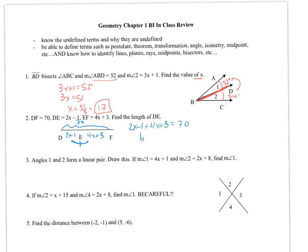So 2x minus 1 plus 4x plus 3 gives me the whole thing of 70. This becomes 6x plus 2 equals 70. We're going to subtract the 2 from each side, so 6x equals 68. That means x is 68 over 6, which reduces down to 11 and 1 third.